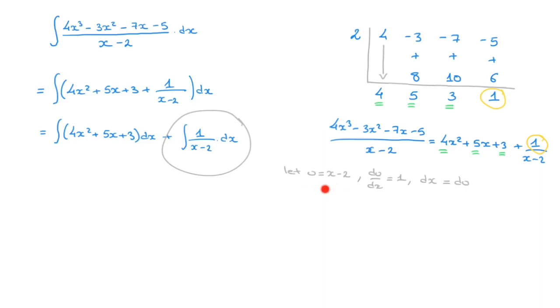Okay, now that we've defined the new variable u and we found the differential dx in terms of du, we can go ahead and rewrite this entire integral in terms of u. Indeed, we can state that the integral of 1/(x - 2) is equal to the integral of 1/u. Remember, we stated that u was equal to x - 2. And the differential dx is equal to du. So I write that as well. That's du.